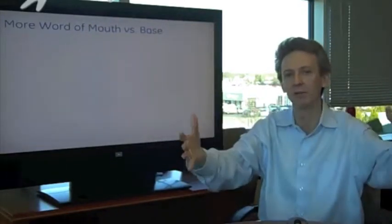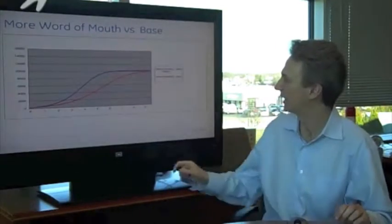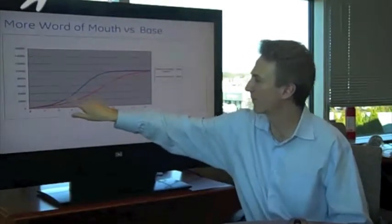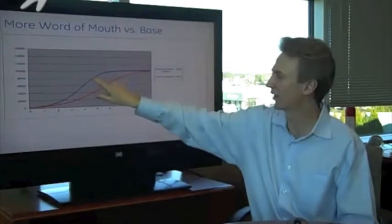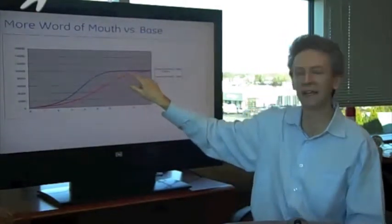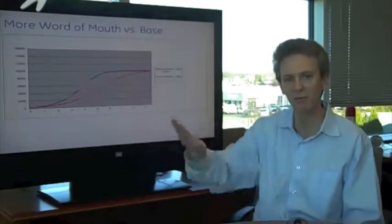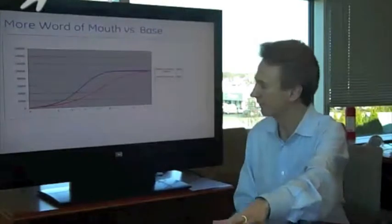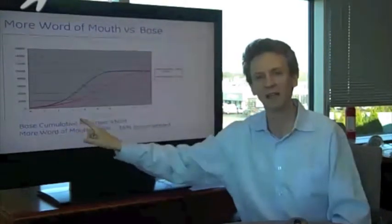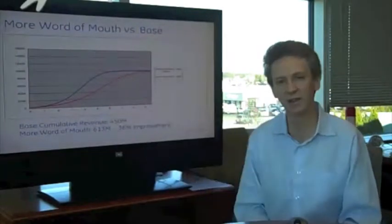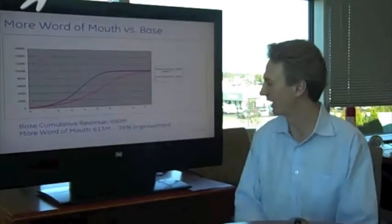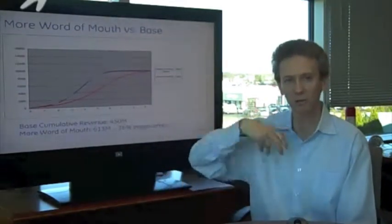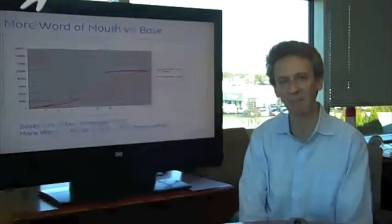So now we're going to compare what if you invested more in word of mouth programs. What will happen is this is your base case and this is the more word of mouth. You can see that you run up the growth curve much faster. So in a sense the S moves to the left, but it's still an S. You still run into market saturation, you just move up the curve a lot faster, which is extremely important in a business. So the result of this one is that the more word of mouth gives you $613 million over this time period. That's a 36% improvement, which is a huge improvement over your base case. So investing in more word of mouth, more talkers in my model, is a great strategy.